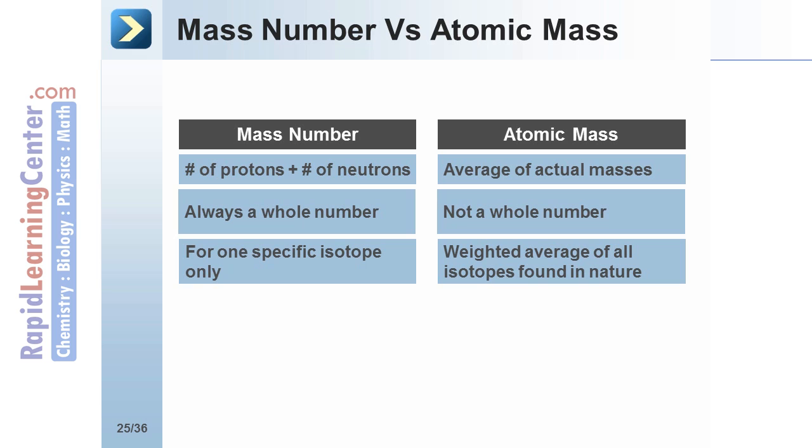The mass number refers to one specific isotope. For example, carbon-12. All atoms of carbon-12 have a mass number of 12.